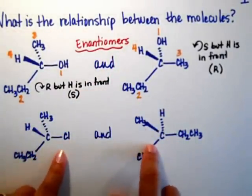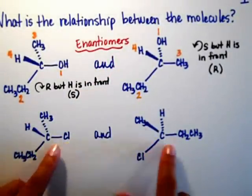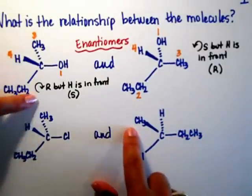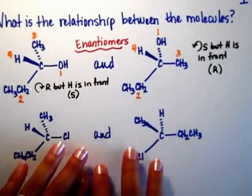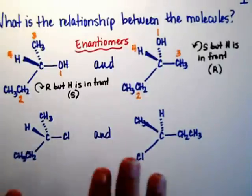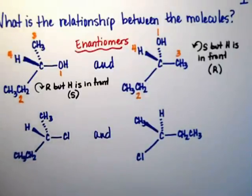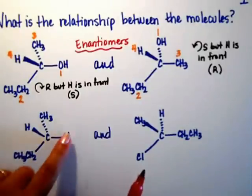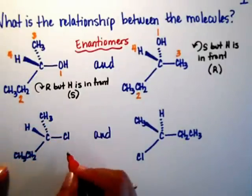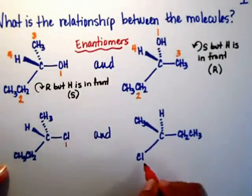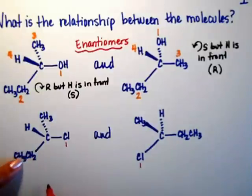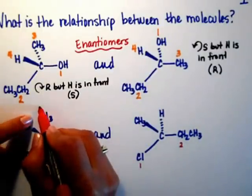Let's do the exact same thing here. I have a chloride, an ethyl, a methyl on both, and a hydrogen, so they're connected the same. These are not constitutional isomers. So I'm going to assign the absolute stereochemistry. Chlorine gets number one. The ethyl gets number two on both, and the methyl gets number three.